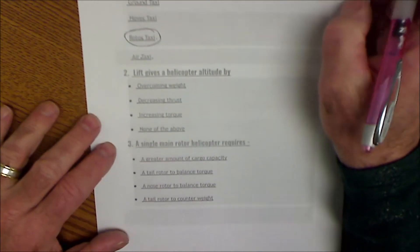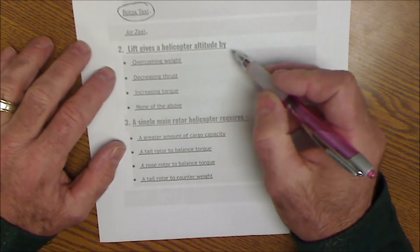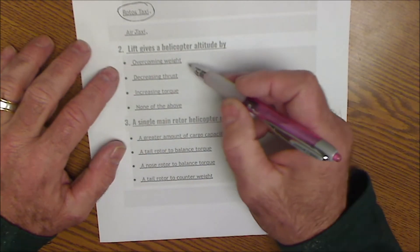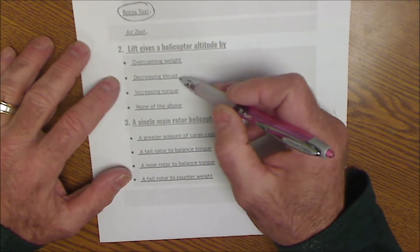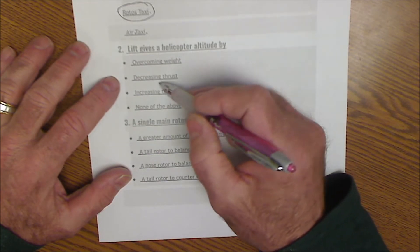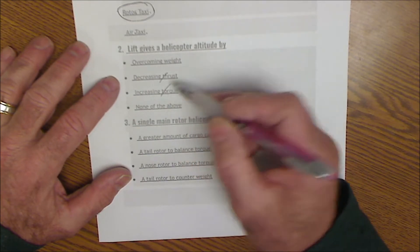Down to number two. Lift gives a helicopter altitude by overcoming weight, decreasing thrust. That doesn't make sense. Increasing torque, that doesn't make any sense. Torque is turning power.